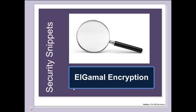We're going to look at the ElGamal encryption method. ElGamal is a public key encryption method which produces smaller keys for the same security as you would get with RSA. It's an excellent method and is used for digital signatures and also for encryption. It's a similar method to the Diffie-Hellman method, and the core of its security is the difficulty of calculating discrete logarithms within a finite field.